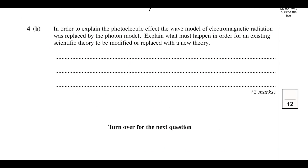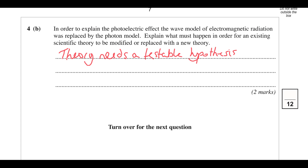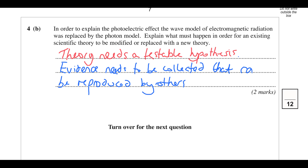In order to explain the photoelectric effect, the wave model of radiation was replaced by the photon model. What must happen for existing scientific theory to be modified or replaced? First, the theory should make a testable hypothesis — this is a problem with string theory currently, as it can't produce testable hypotheses. Then evidence needs to be collected, and that evidence must be reproduced by other scientists to verify it's correct.